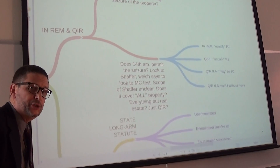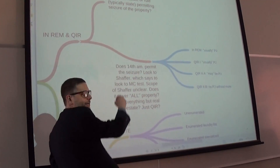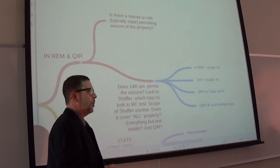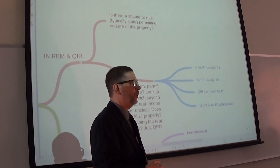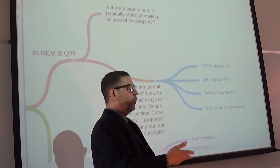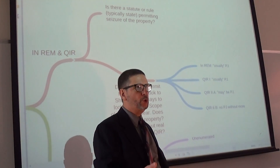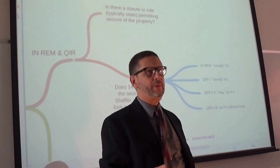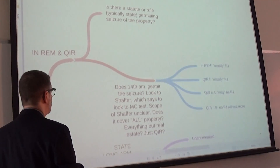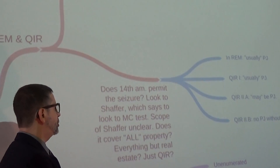Analyzing jurisdiction over property in state court — first you've got to ask, is there a state rule or statute that permits the seizure of the property? Look for facts that tell you what sort of state law is being used to seize, control, or garnish the property. Second, we have to do the constitutional analysis: does the 14th Amendment permit the seizure?